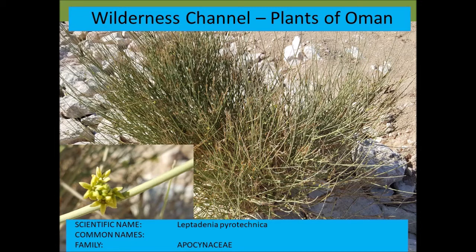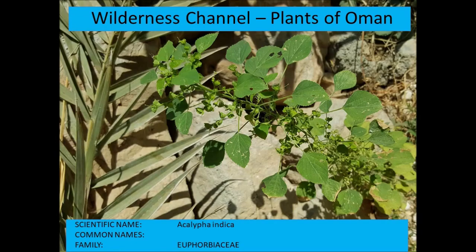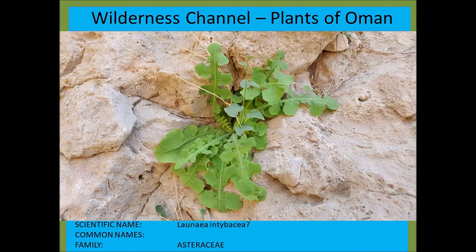Acalypha indica — many Acalyphas have edible leaves that can be cooked into a kind of spinach. Lorneia intricata is another example of a Lorneia species.